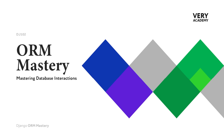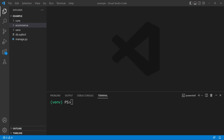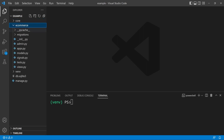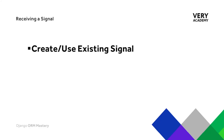We're going to build a simple application which is going to listen and receive a signal. You can use any of your existing Django applications to follow along — this code is available in the tutorial resources, so you can download and follow along step by step. We have a basic setup with a core application and an e-commerce app, and inside it we have two simple models: Product and Category. To work with signals in Django, we first need a signal — there are already built-in signals we can utilize, or alternatively you can create your own.